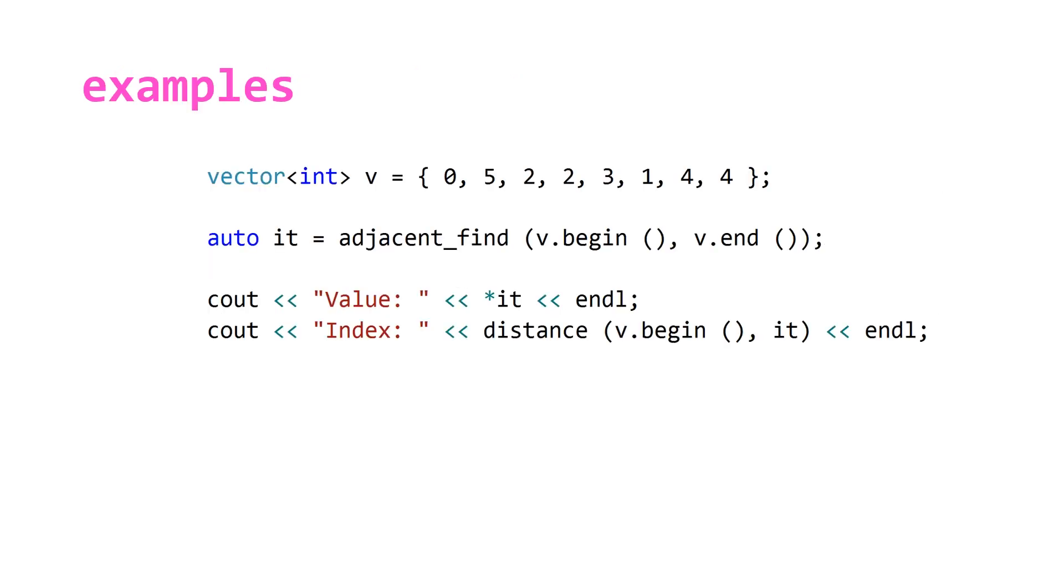So let's take a look at an example. Here we have a vector of integers with the values 0, 5, 2, 2, 3, 1, 4, 4. What adjacent_find is going to do is if we give it the two iterators begin and end, it's going to return us an iterator that points to the first of two elements that match each other that are adjacent, or it'll return us just last, which is past the last element, if there are no two such values.